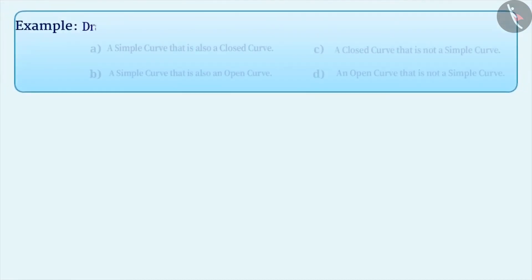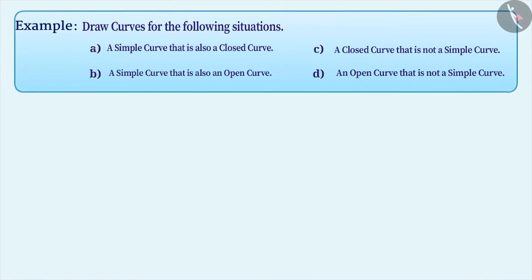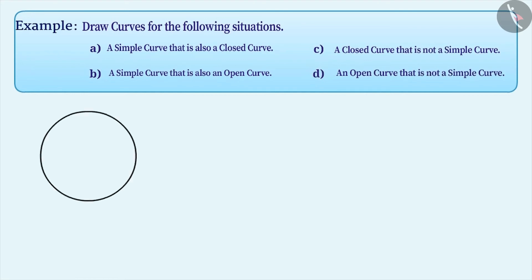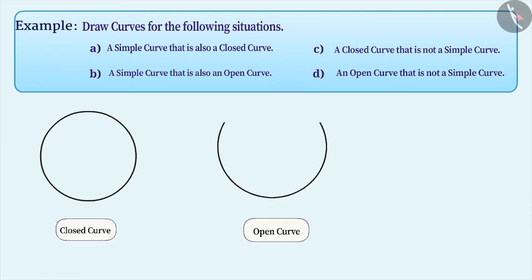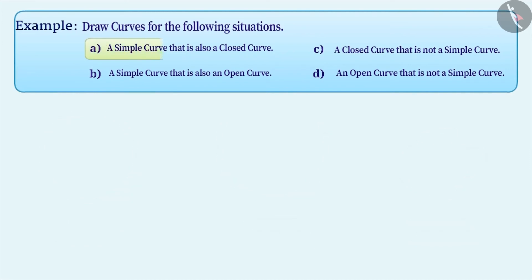Next example: for the following situations, draw a curve — a simple curve which is also a closed curve, a simple curve which is also an open curve, a closed curve which is not a simple curve, and an open curve which is not a simple curve. If ends of a curve are joined, it is a closed curve; otherwise it is an open curve. If a curve does not cut itself, it is a simple curve. Based on this understanding, we can draw a simple curve which is also a closed curve in this way.